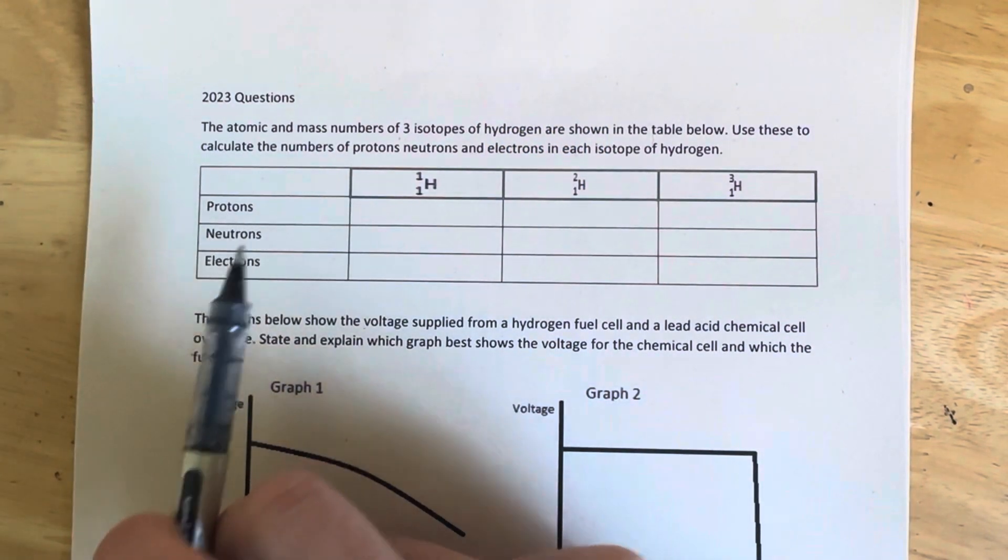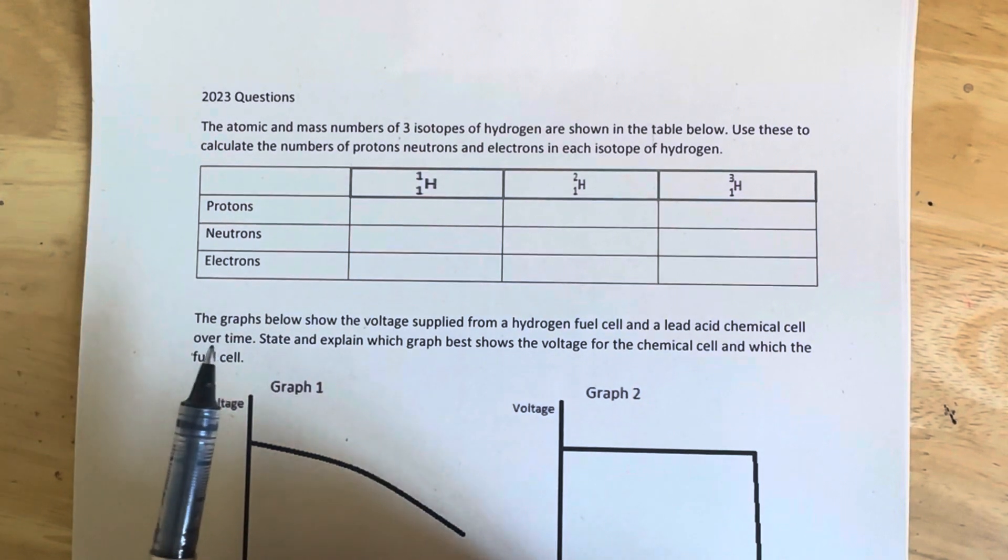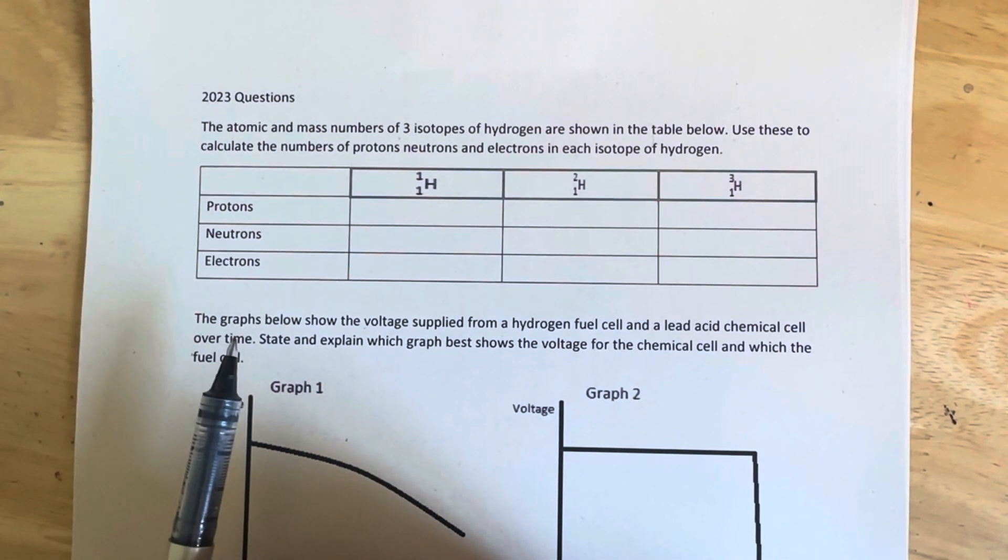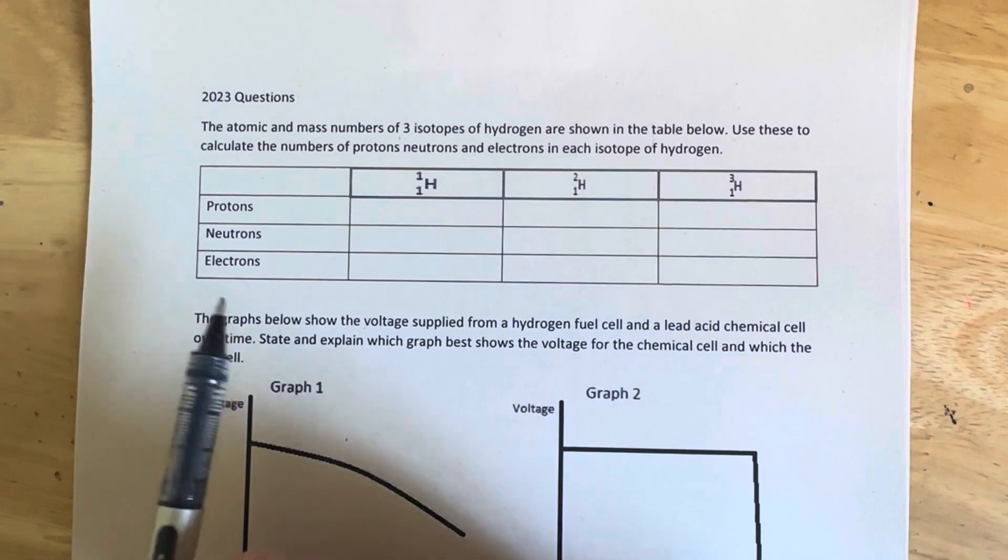Question about isotopes here. Isotope, of course, is two or more atoms of the same element with the same number of protons, but a different number of neutrons.